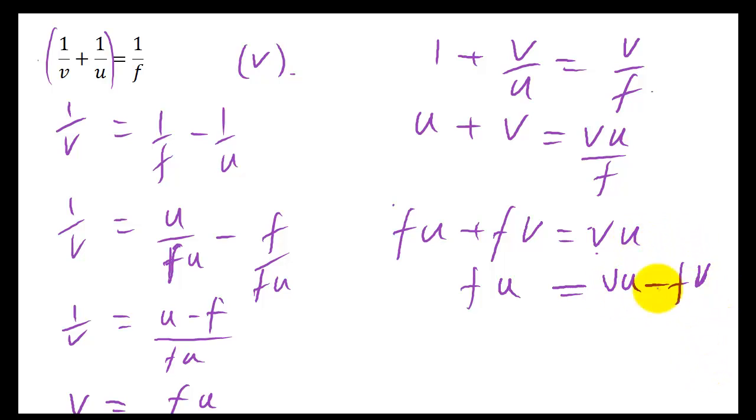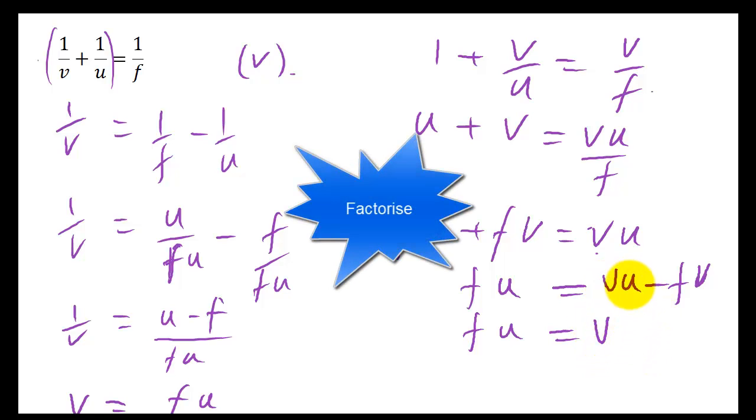Now, you've got two V's. How do you get them on their own? Well, this is a factor of this, and this is a factor of this. So therefore, the trick here is to factorise by V. So take V out, you're left with U here. Take V out of here, you're left with F.